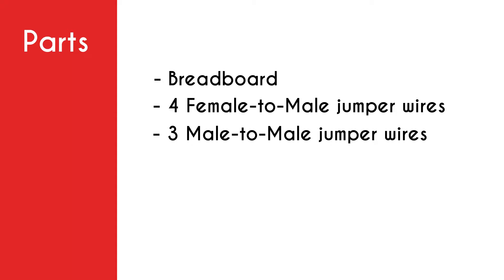As always, the first thing we're gonna do is go over the parts used in this tutorial. First you need a breadboard, next you need four female to male jumper wires and also three male to male jumper wires, three 220 ohm resistors, and lastly three LEDs. The LEDs have to be different colored - I'm actually using red, yellow, and green because I'm gonna be making a traffic light program.